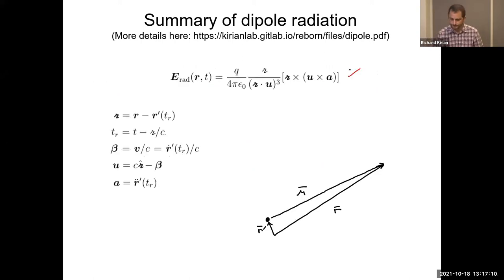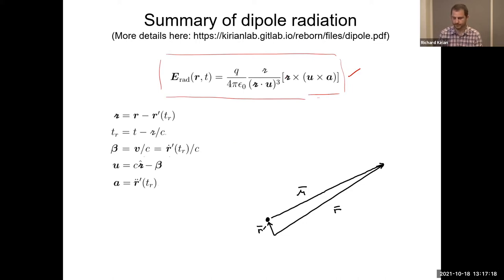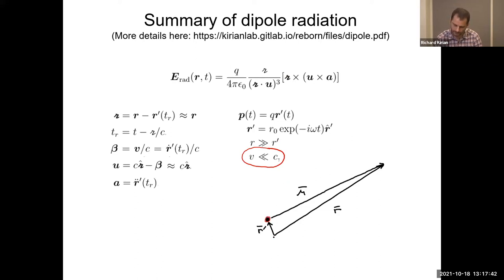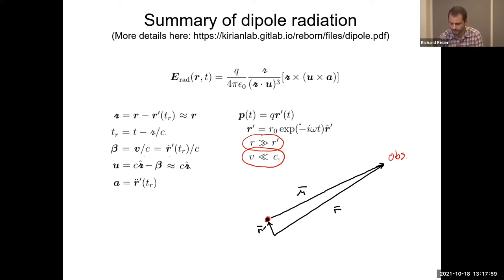We have a radiation field, correct for relativistic particles. Now we go into the dipole approximation and go non-relativistic. The velocity will be much less than the speed of light. The dipole approximation also assumes the displacement of the charge is much smaller than the sample-to-detector distance. We'll assume the charge oscillates sinusoidally, and we define the dipole moment p.